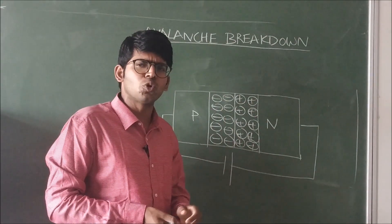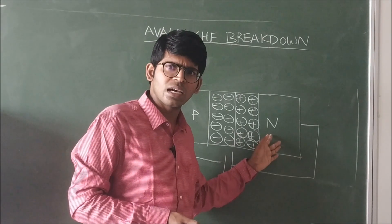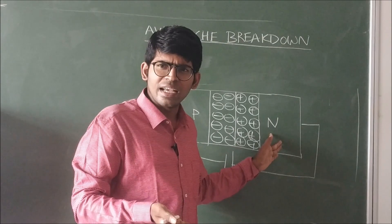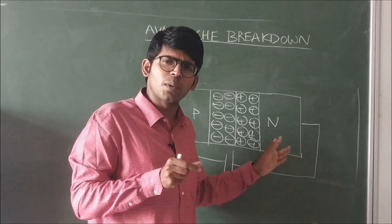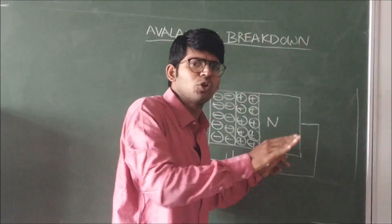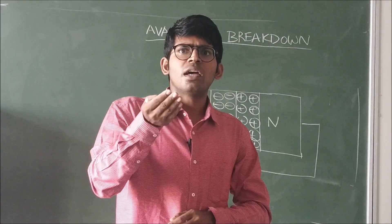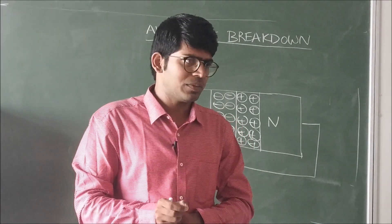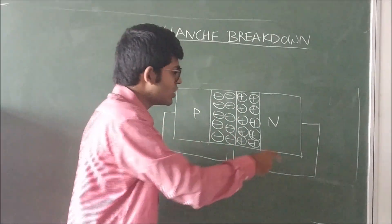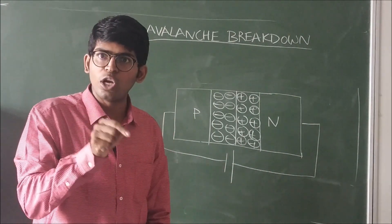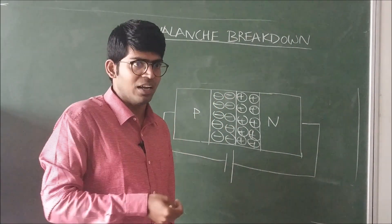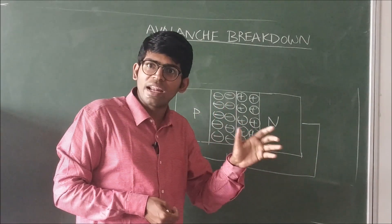In general, the reverse bias current is due to minority carriers. These minority carriers are formed whenever thermal energy, light energy, or sound energy is given — a few electrons in the covalent bonds come out, forming electron-hole pairs. These minority carriers are not formed due to doping. Even though the potential barrier and depletion region are there, these minority carriers move freely because they move in the direction of the electric field.